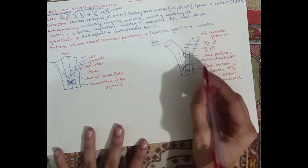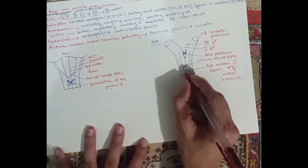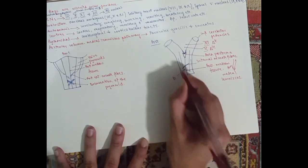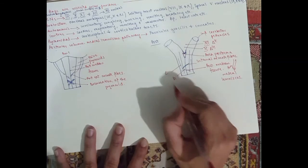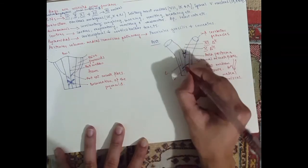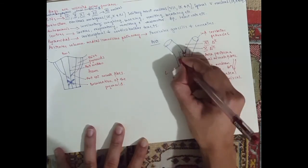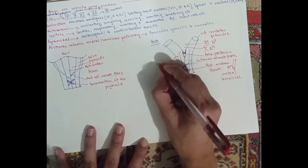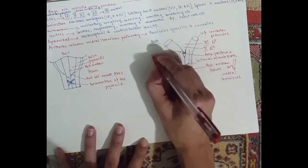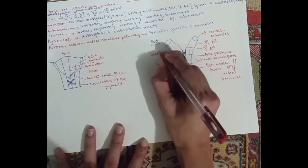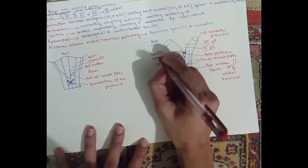Then you've got, you remember the tracts, the fasciculus gracilis and cuneatus. These are the ones. So this one's the gracilis, and this outer one is the cuneatus fasciculus. And these tracts end in tubercles. So this one would be the cuneate tubercle, and this one here would be the gracile tubercle.